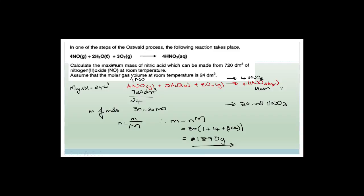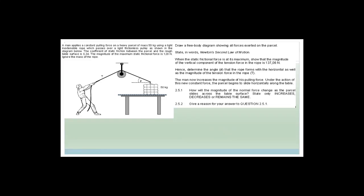The maximum mass of nitric acid that can be produced from 720 dm³ of nitrogen monoxide is 1890 grams. Now let's start on physics. I've skipped the multiple choice questions because they take a while, but I'll go through them closer to the time.